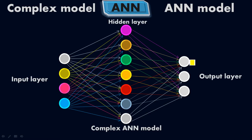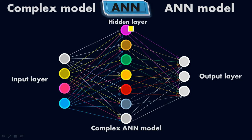We know that we have to connect all these cells with the next cells. In front of the first input cell we have a total of seven cells in the hidden layer, so we have to connect it with all seven cells. Similarly, the second input cell connects with all seven cells in the hidden layer, the third one with all seven cells, and the fourth one with all seven cells. Moving ahead from the hidden layer to the output layer, we have three cells in the output layer, so you have to connect each and every single hidden layer cell with all three output cells.